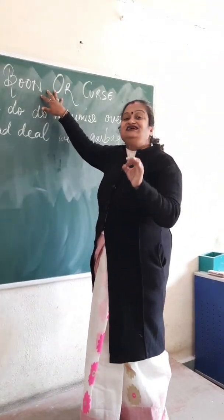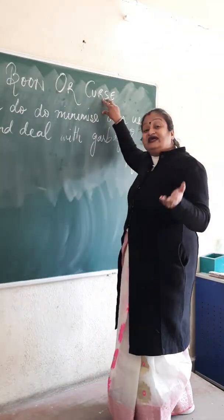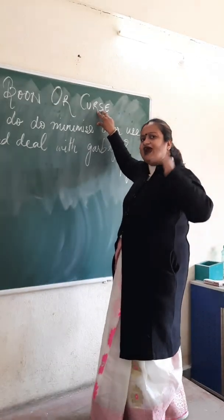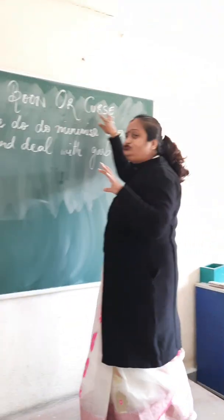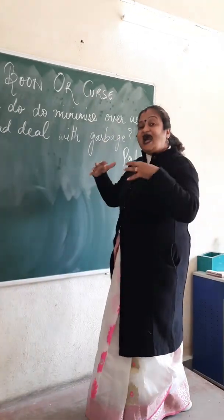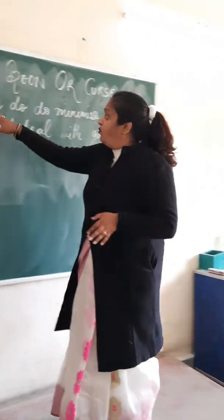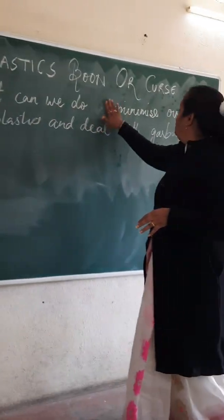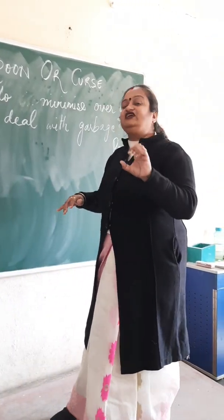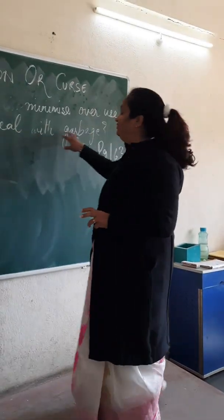And definitely, it is a curse also. Curse means there are certain disadvantages. So what we have to do is balance both. We can use plastic and similarly, we can save our environment also. What can we do to minimize overuse? We have to use plastic, but we cannot overuse it, and we should deal with the garbage properly.